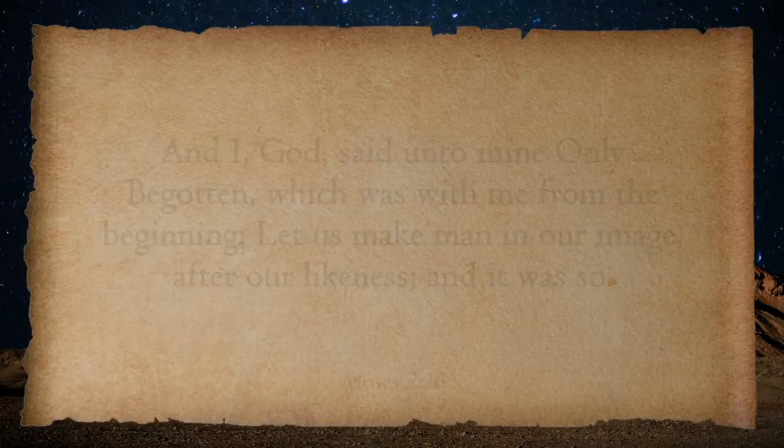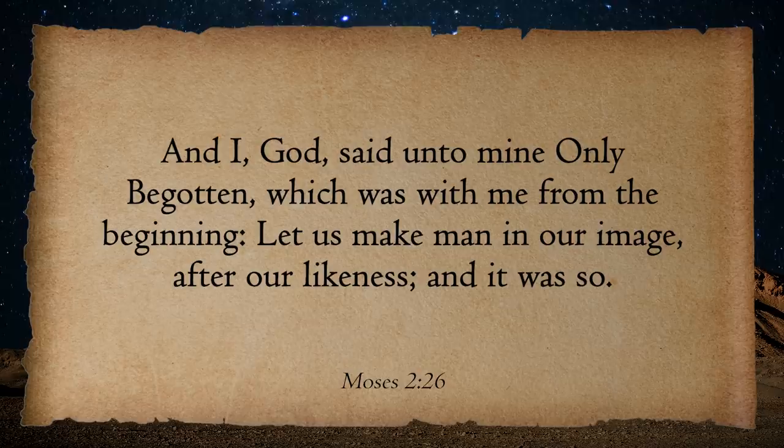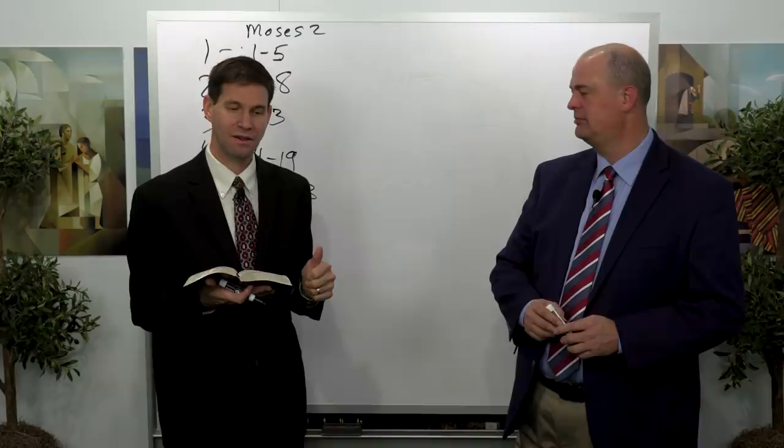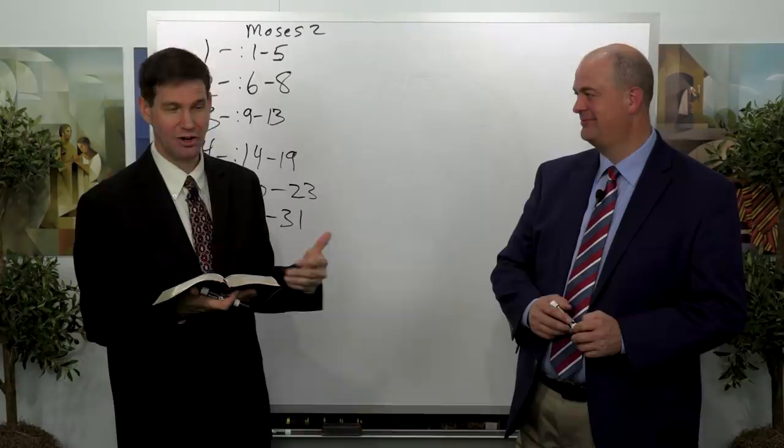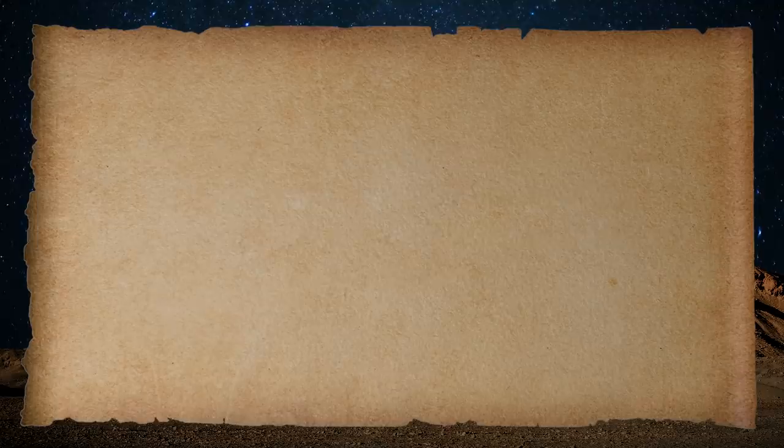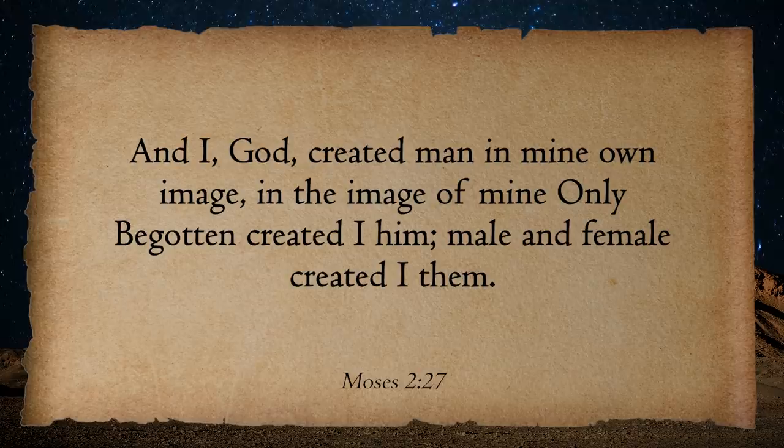Then begins the most important part of the creation from our perspective. Verse 26: 'I, God, said unto mine only begotten, which was with me from the beginning, let us make man in our image, after our likeness, and it was so.' Now we get Adam created in the image of God the Father and God the Son, after their likeness, their essence, their similitude. Verse 27: 'And I, God, created man in mine own image, in the image of mine only begotten created I him, male and female created I them.'